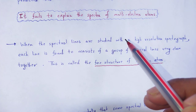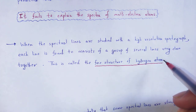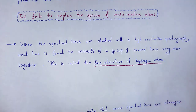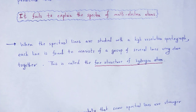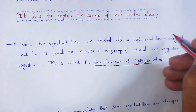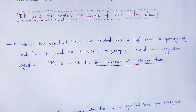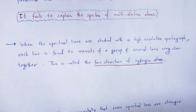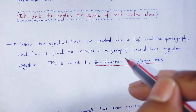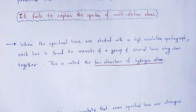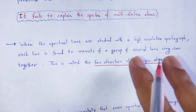As Bohr predicted his postulates regarding the hydrogen spectrum, he observed the hydrogen spectrum as the Lyman series, Balmer series, Paschen, Brackett, and Pfund series. When those spectral lines are seen using a spectrograph, we see that a single line is actually not a single line — it consists of a group of several lines very close to each other, which is called the fine structure of the hydrogen atom. That fine structure cannot be explained by Bohr's atomic model. That is another drawback.